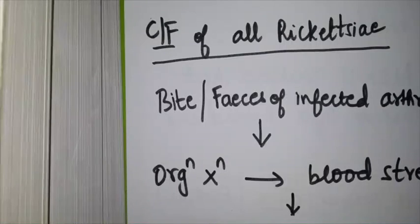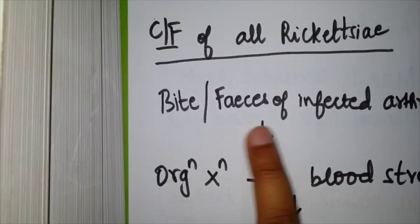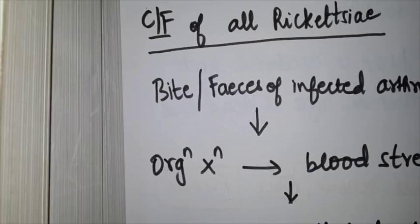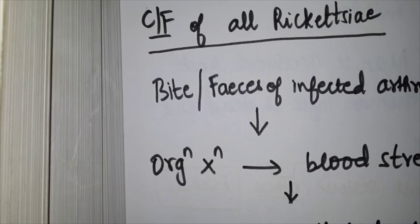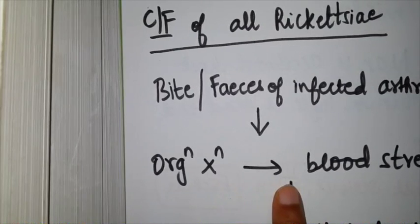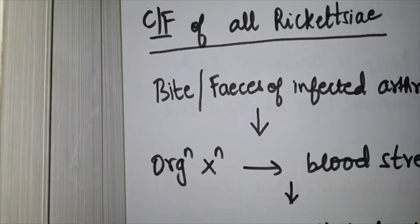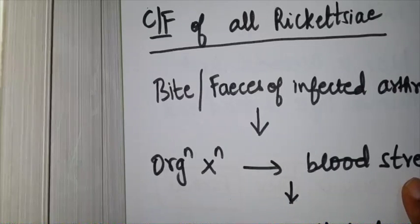Rickettsia, as I told you, is arthropod-borne. Bite or feces from the infected arthropod—lice, mites, or ticks—is the source of infection. When it enters the bloodstream due to bite or scratching, the organism multiplies locally, invading tissues and later entering the bloodstream.